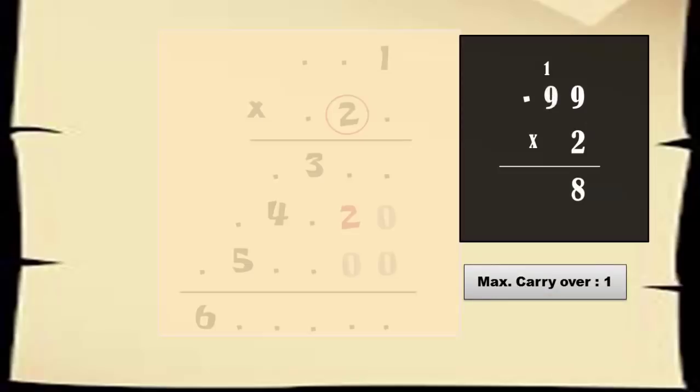Now consider that the next digit also has the highest value 9. So 2 times 9 plus 1 gives the highest possible value 19. This time as well, the maximum carryover is one.